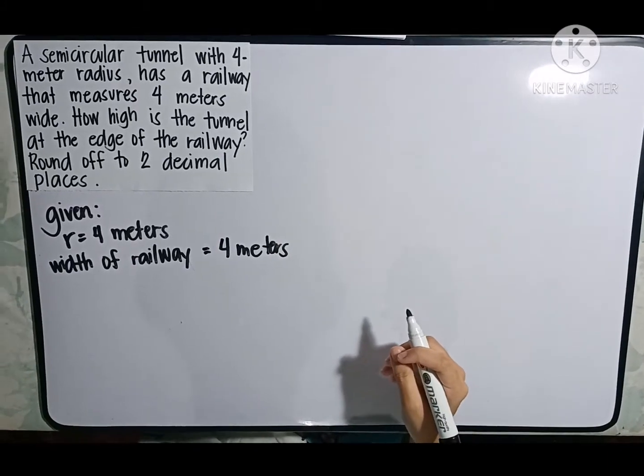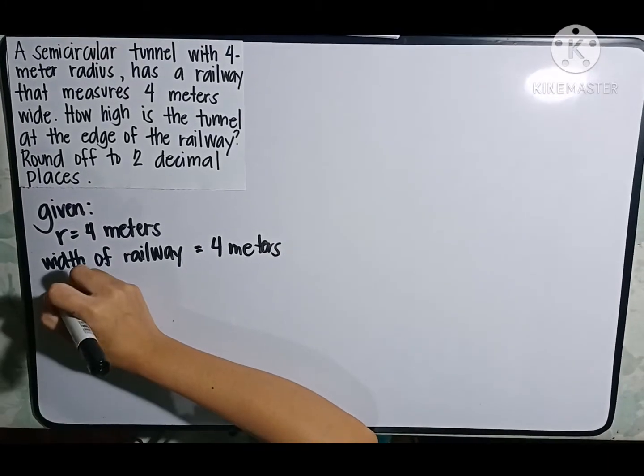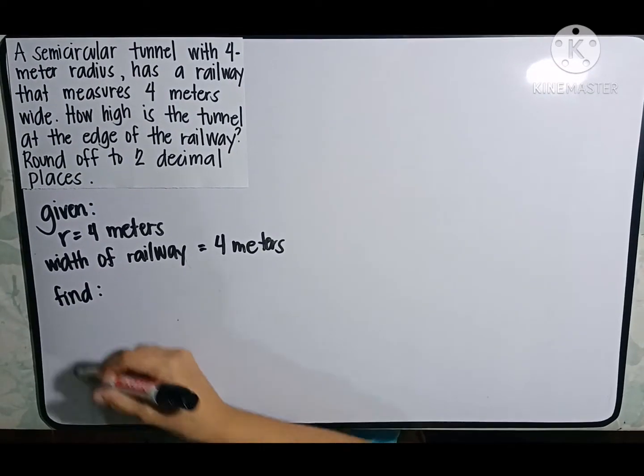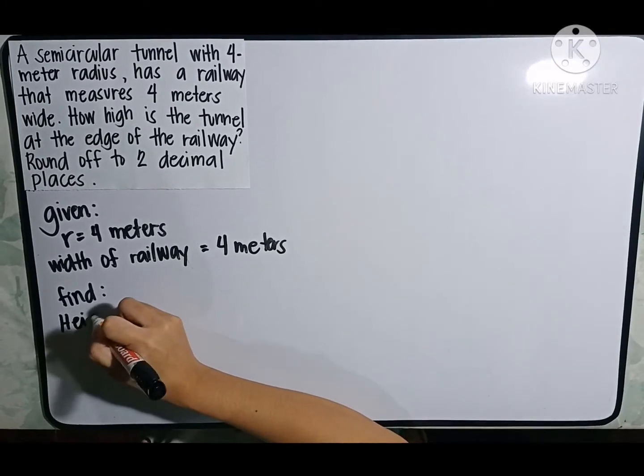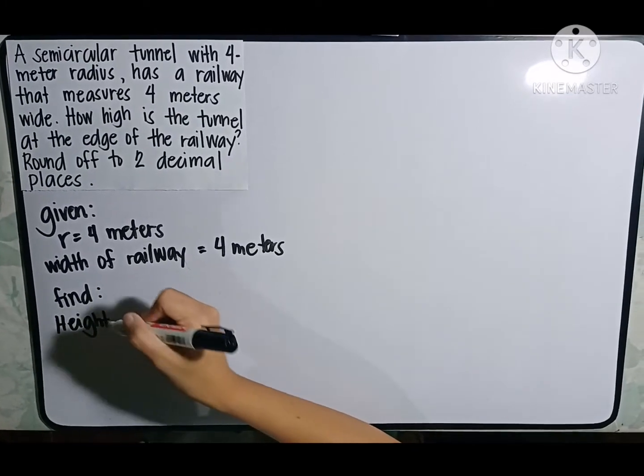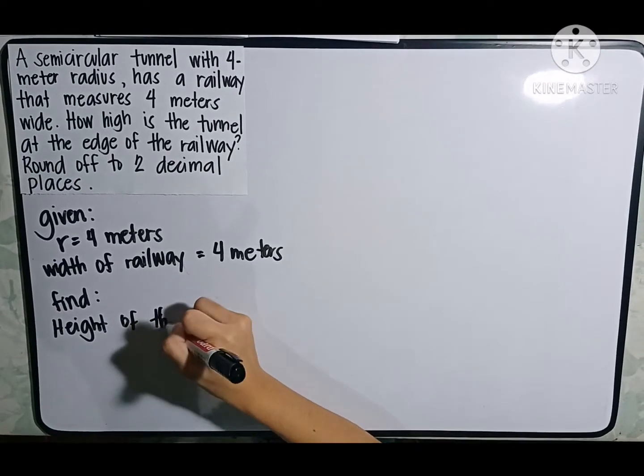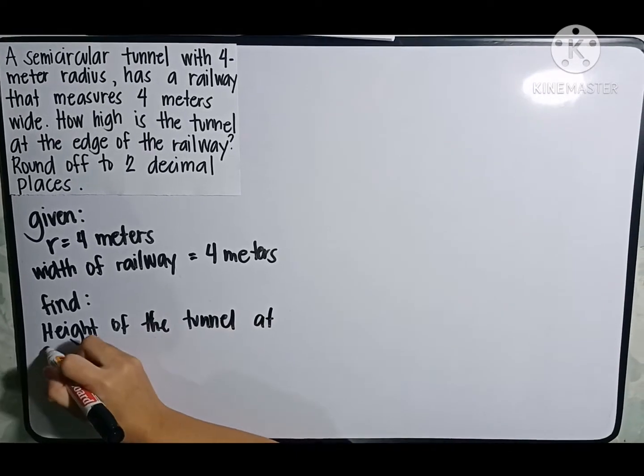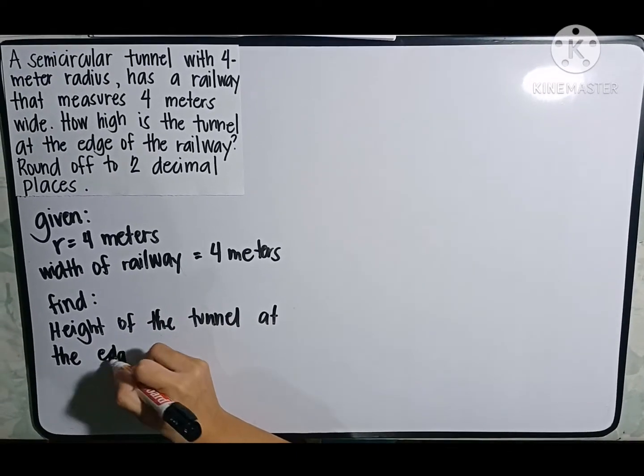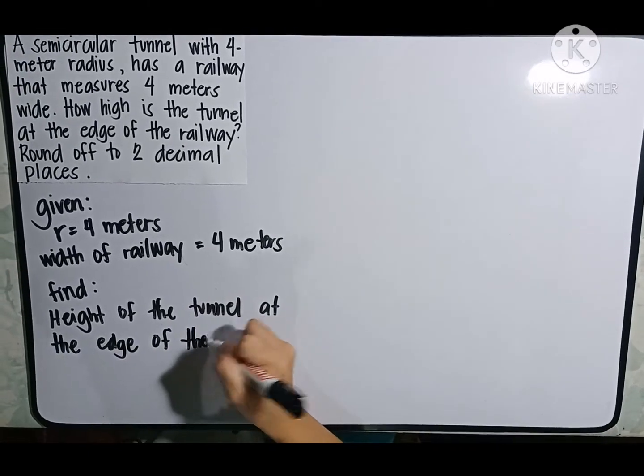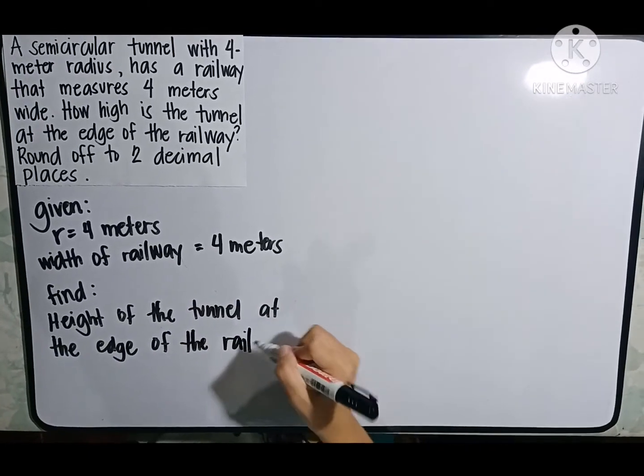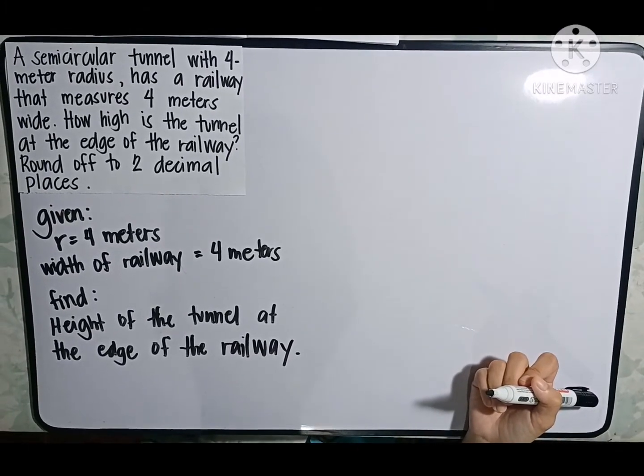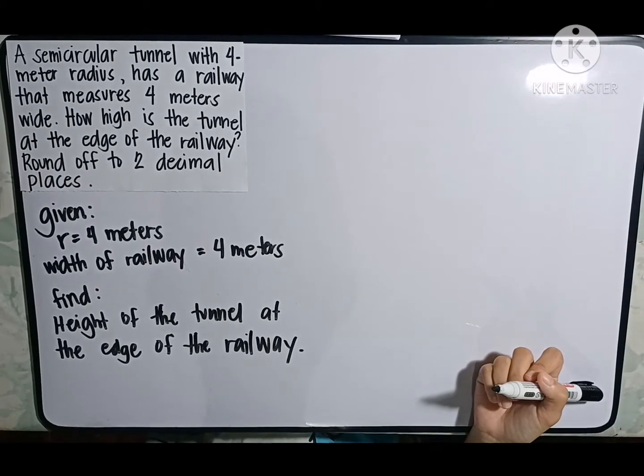The next thing to do is to write down what is asked for. Let us write it as find: Find the height of the tunnel at the edge of the railway. Now that we already write down what are the givens and what is asked for.